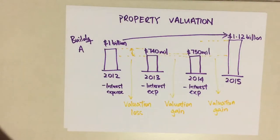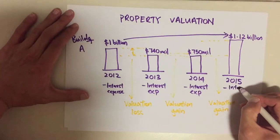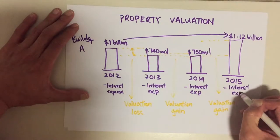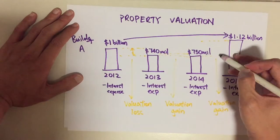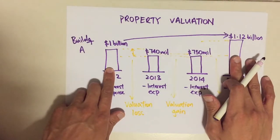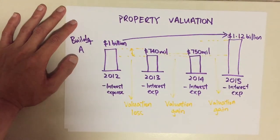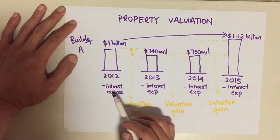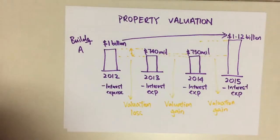Why? Because in 2015, don't forget, you still have the interest expense. So the gain — even though there's a magnificent gain here — between the year that they purchased until the year that they let go of the building, it was only 200 million that they have earned. We have to take into account this interest expense, because it is really cash flowing out from the REIT structure.